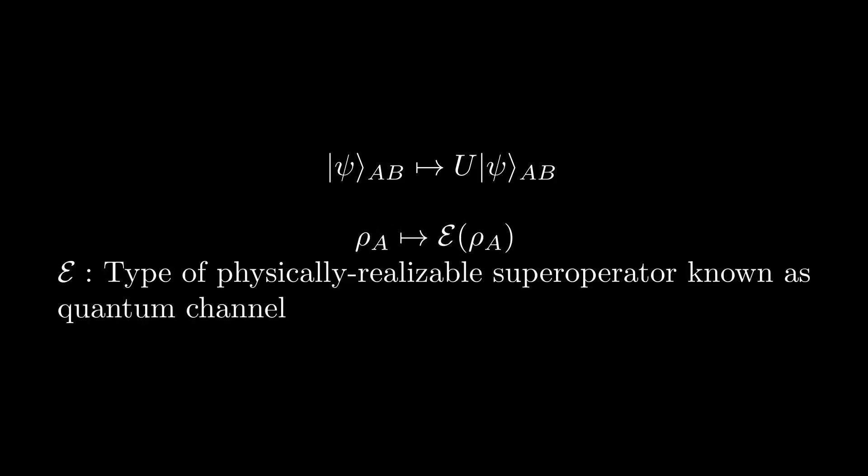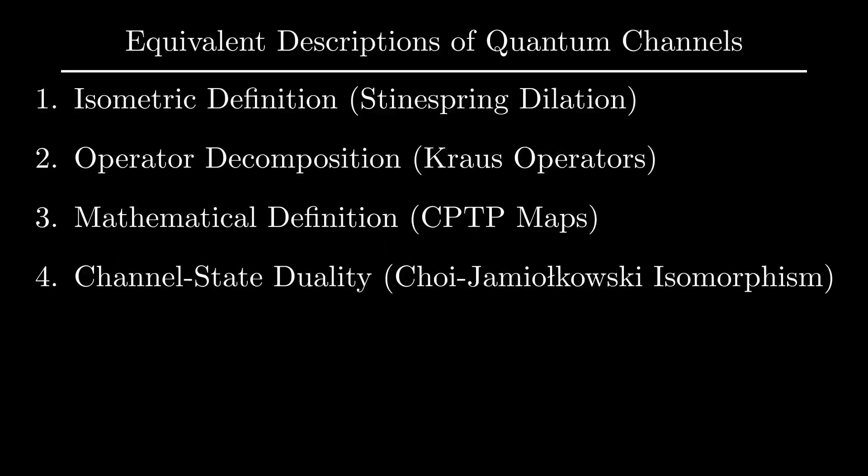that maps an initial density matrix for A to the final density matrix for A. Since E maps operators to operators, it is also known as a superoperator. And since the superoperator maps physical density matrix states to other physical density matrix states, it is called a physically realizable superoperator. So how exactly do we describe this quantum channel? Well, as it turns out, there are four equivalent formalisms for the quantum channel, all of which will be explored in this video.